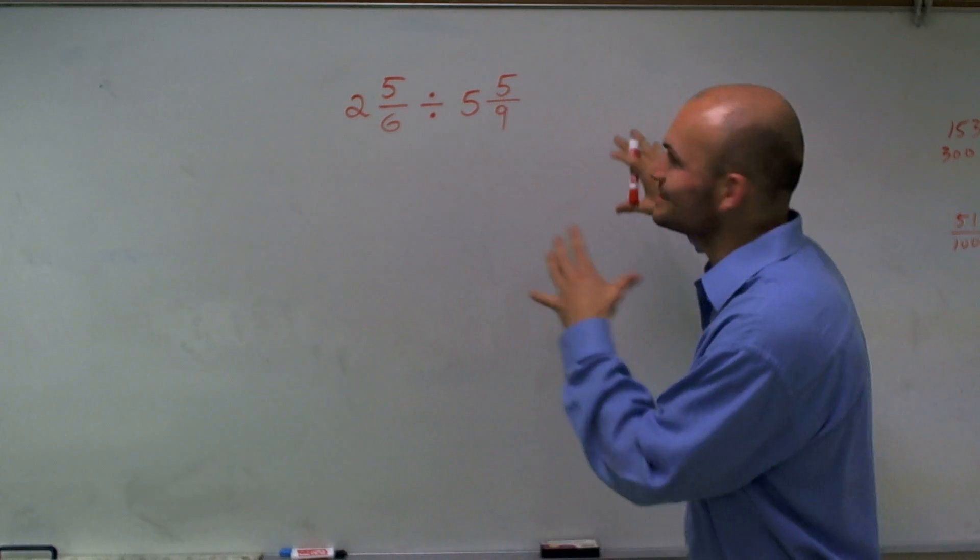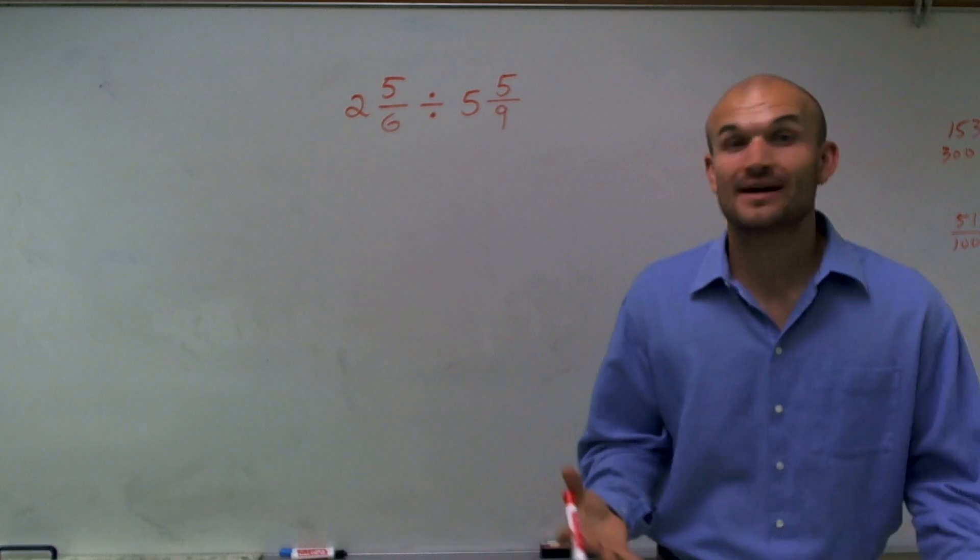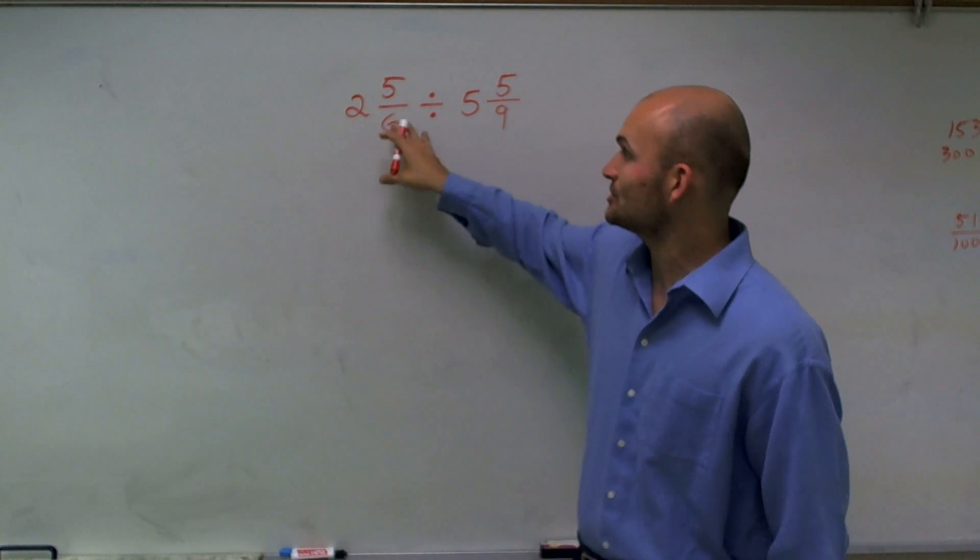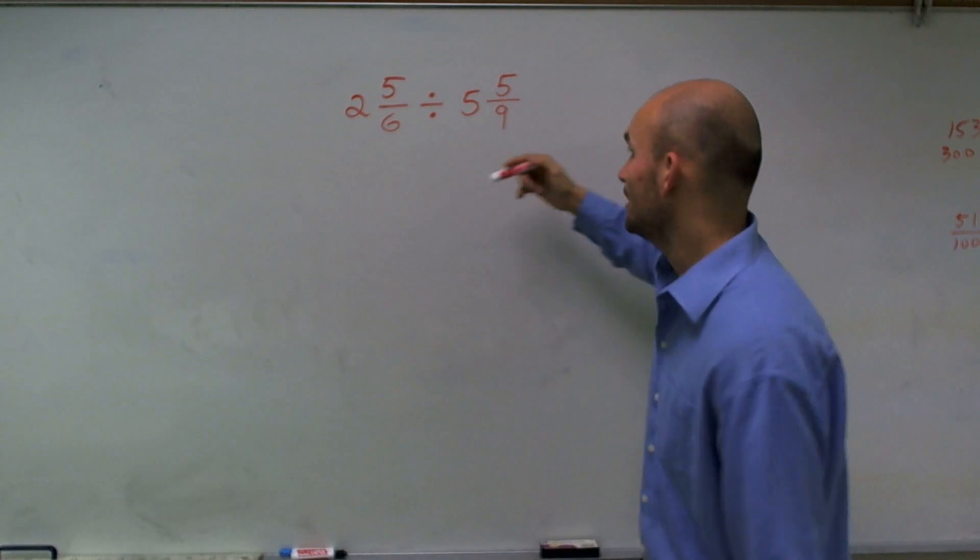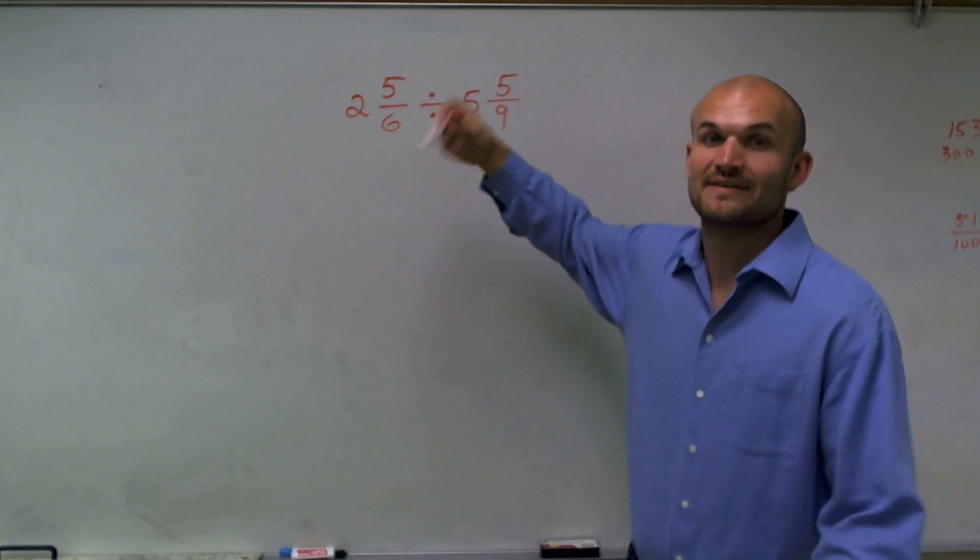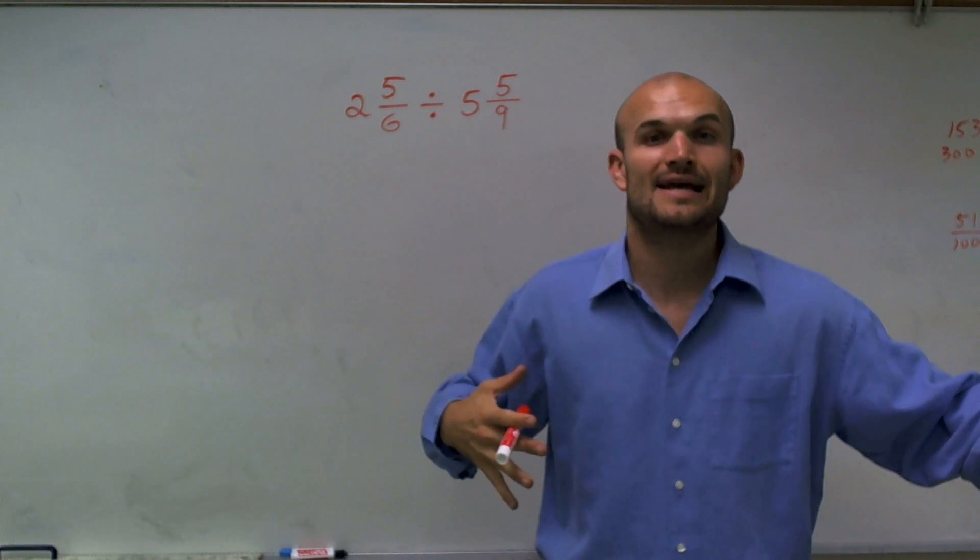What we're going to do is we notice that these are mixed numbers. And mixed numbers are great for us to be able to identify numbers, like how much is 2 and 5/6? Well, that's 2 units plus 5/6 of another unit. And this is 5 units plus 5/9 of another unit. And that's great. It's really helpful for us to get a visual understanding of it.